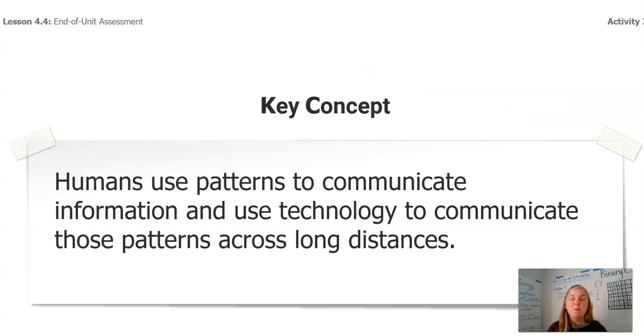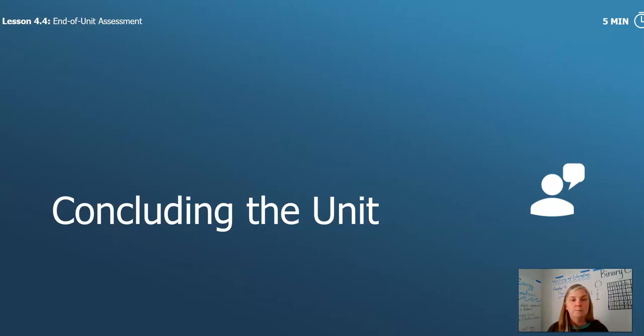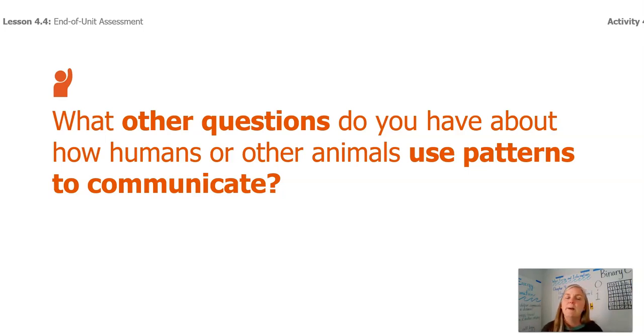We're tying it back to binary code and patterns in human communication, but also those bottlenose dolphins and all the other animals that you learned about. And in what ways did you think binary code is useful for communicating across distances? Because you know already, I love talking to my mom, and I definitely need the binary code to get that to work well. The big concept you need to be walking away with, though, is humans use patterns to communicate information and use technology to communicate those patterns, the binary code, across long distances. We're using patterns to communicate short and long distances. What other questions do you have about how humans or other animals use patterns to communicate? I found myself looking at binary code. I thought of all crazy questions about how does it really work. I hope that you've been inspired to look further.